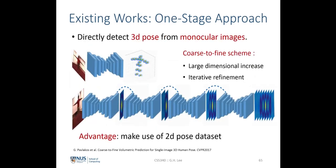There is also a one-stage approach where, given the 2D image, we directly estimate the 3D human pose. In CVPR 2017, a work first proposed this using a cost-finding scheme. The advantage is that it makes use of 2D pose datasets directly — there's no two-stage pipeline, just one single coherent end-to-end network that directly lifts 2D to 3D. However, this approach is much more challenging and results are usually less competitive than the two-stage approach.